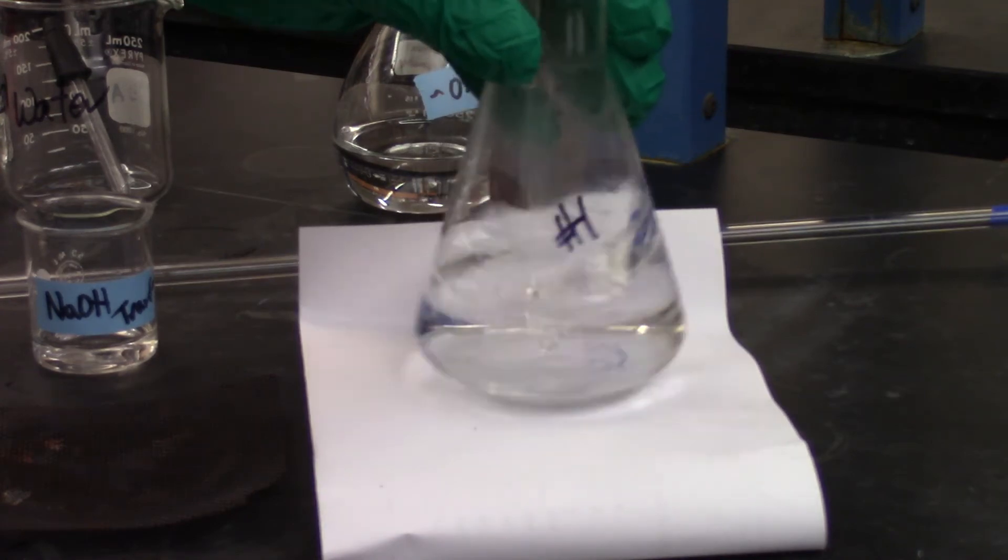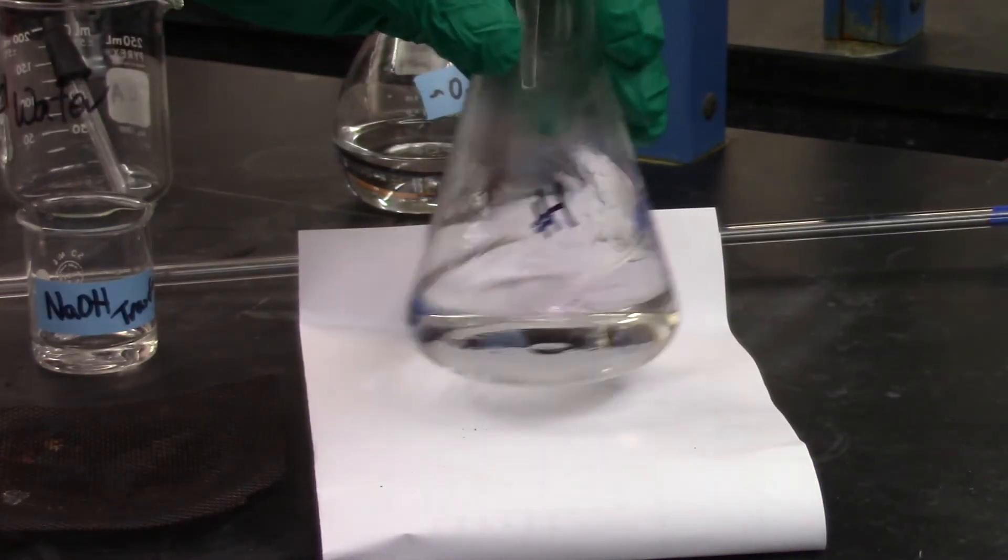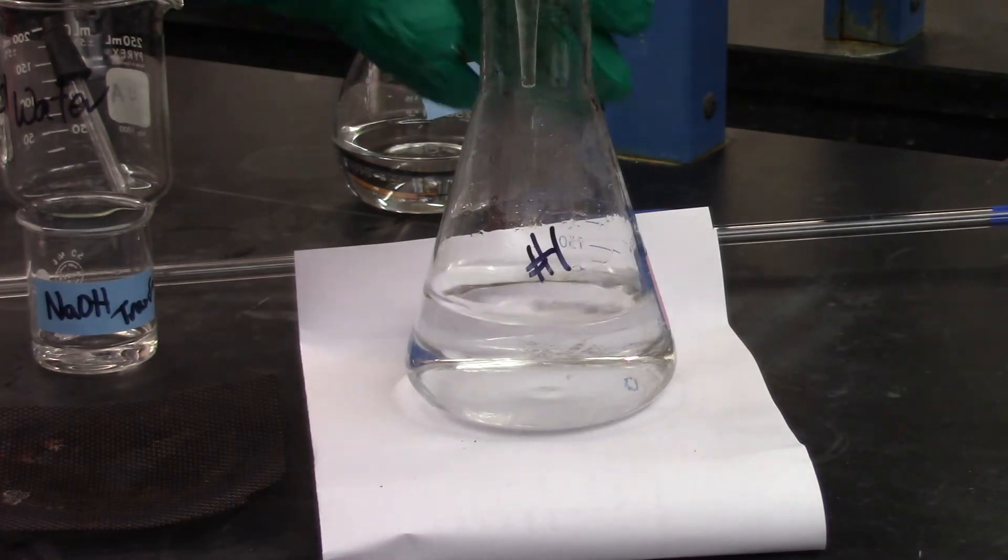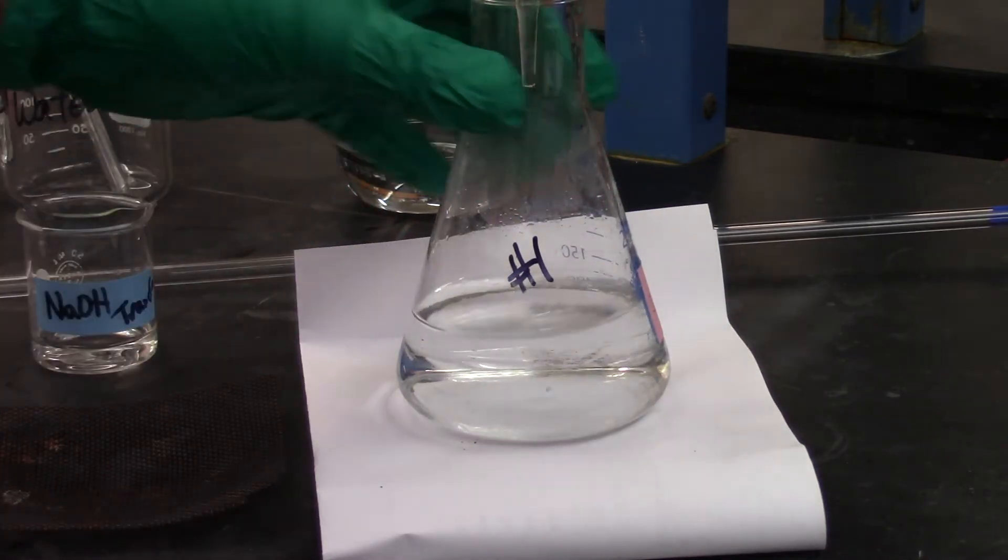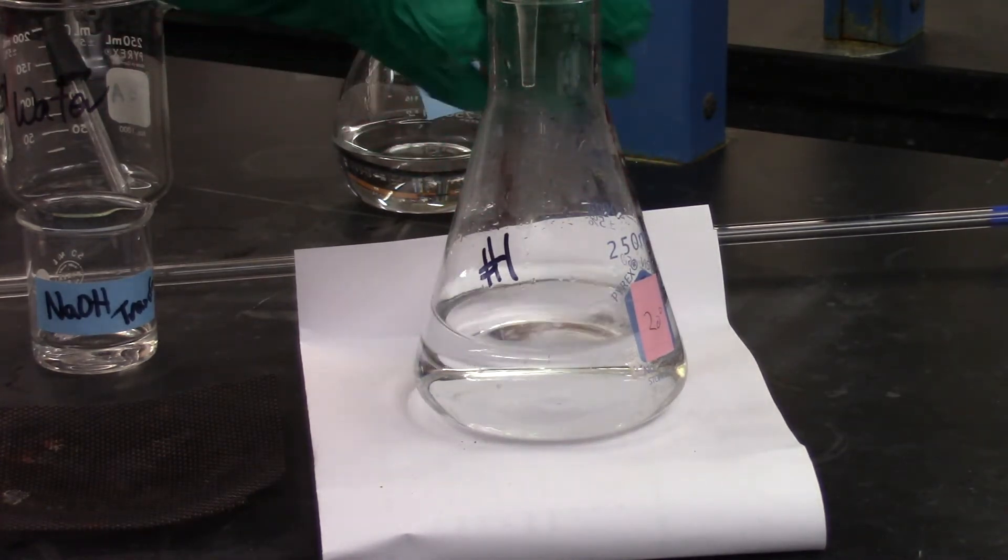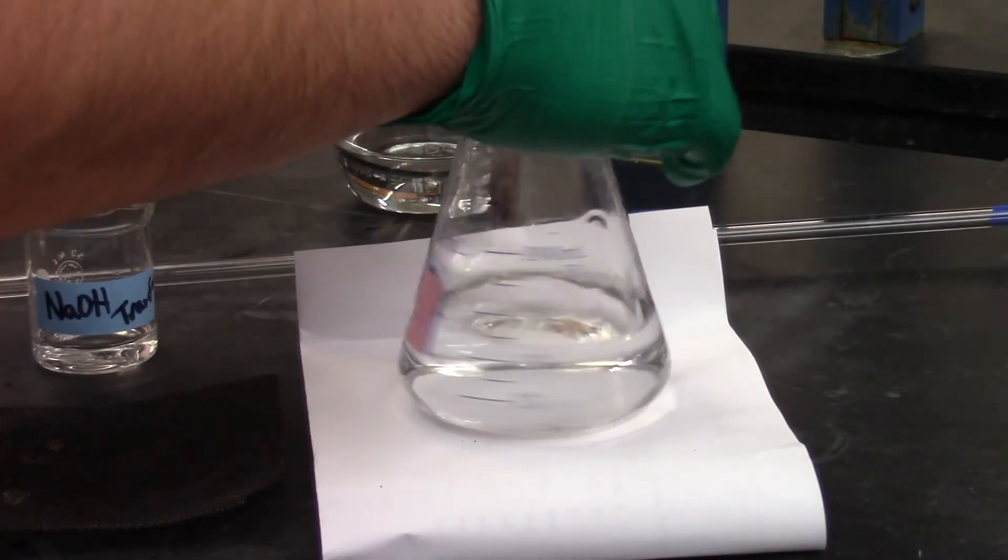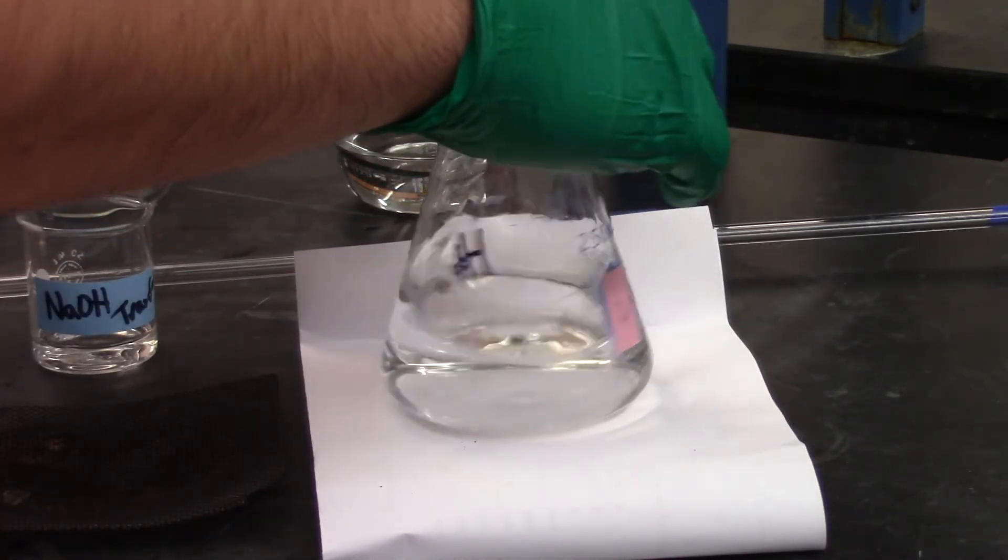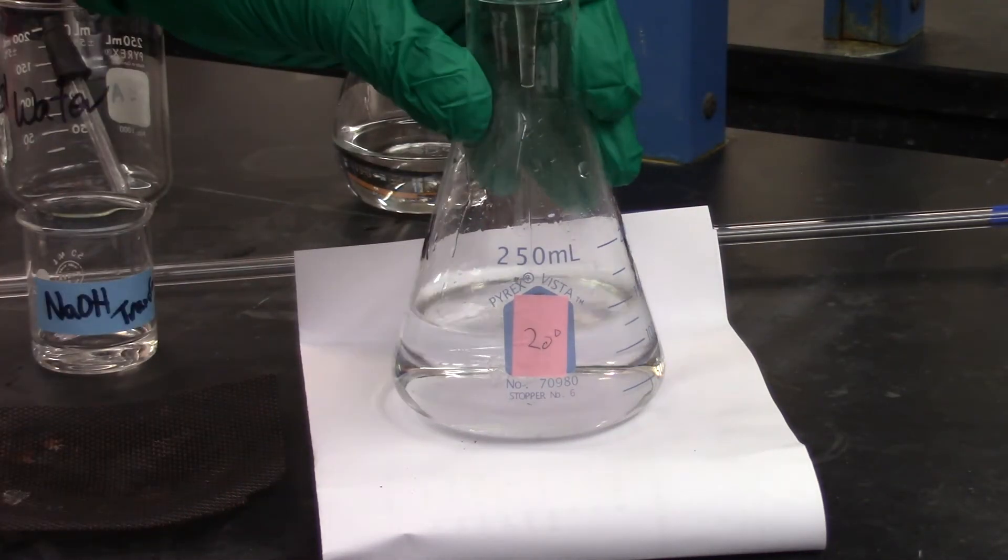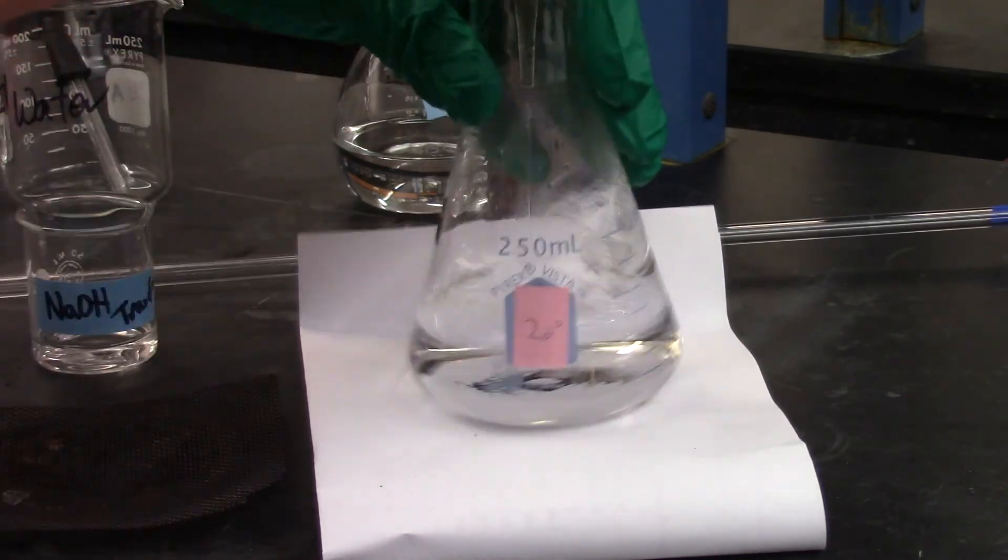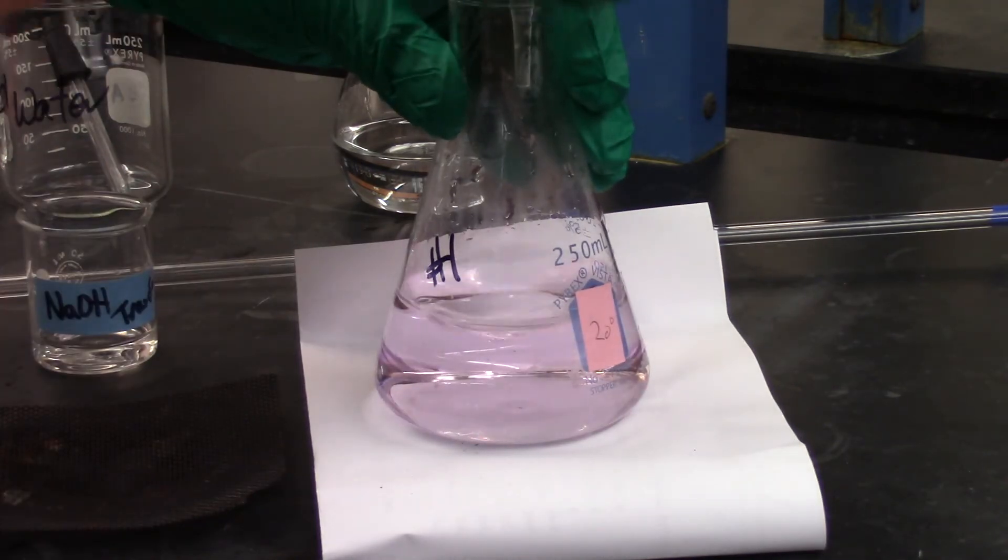So the end of the reaction is going to be once I have that full pink color throughout the solution. And we want it to be a very light pink because if we get it right at that titration volume, that's the exact amount of NaOH we needed to react with the KHP in here. So this is flask number one. Let's actually rinse this down so you can see. You can see as you get closer to the, oh, and there we go.